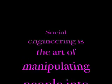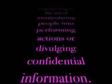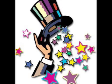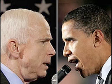Social engineering is the art of manipulating people into performing actions or divulging confidential information. While similar to a confidence trick or simple fraud, the term typically applies to trickery for information gathering or computer system access. In most cases, the attacker never comes face to face with the victim.